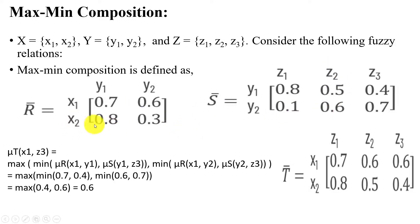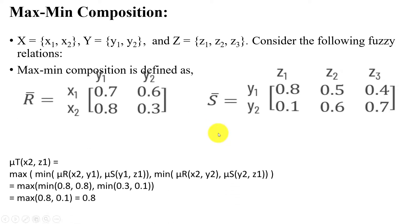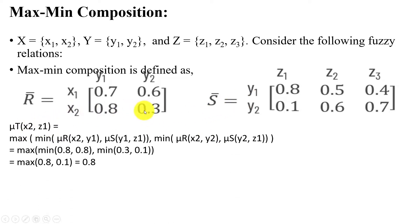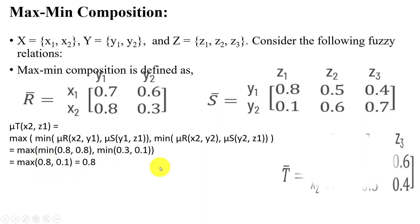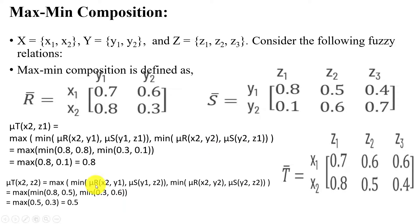Now repeating for the second row: T(x2,z1): min(R(x2,y1), S(y1,z1)) = min(0.8, 0.8) = 0.8, and min(R(x2,y2), S(y2,z1)) = min(0.3, 0.1) = 0.1. Max{0.8, 0.1} = 0.8, so T(x2,z1) = 0.8. For T(x2,z2): min(0.8, 0.5) = 0.5, and min(0.3, 0.6) = 0.3. Max{0.5, 0.3} = 0.5, so T(x2,z2) = 0.5.